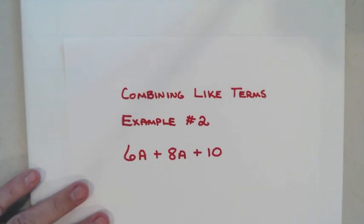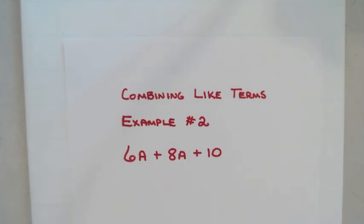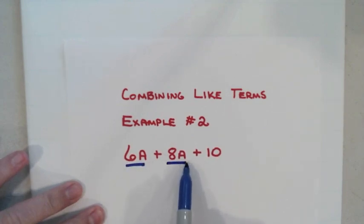Example number two. This one has three terms. There are only two things that go together in this problem. It's the 6a and the 8a. These two go together. I've got 6 a's right here, 8 a's right here. I put these two together. I have a total of 14 a's.